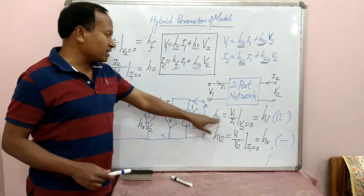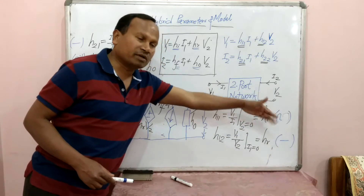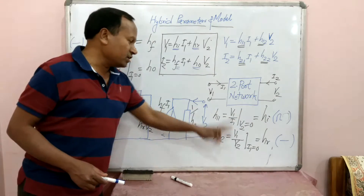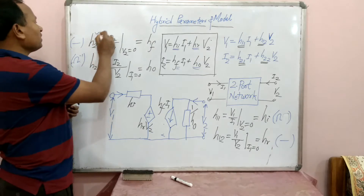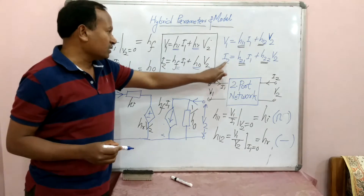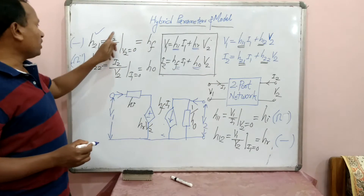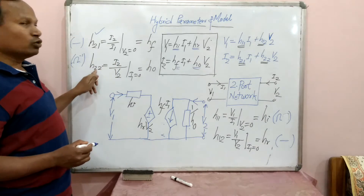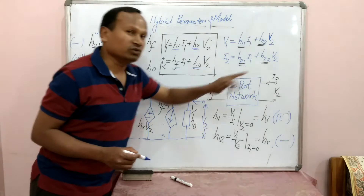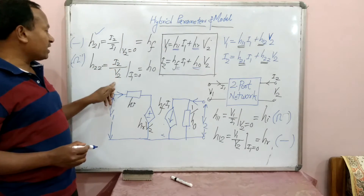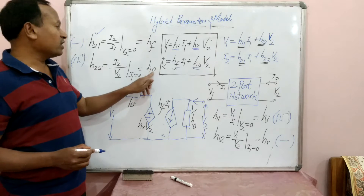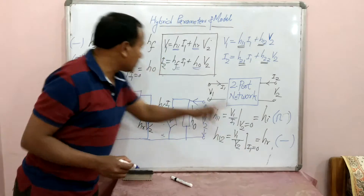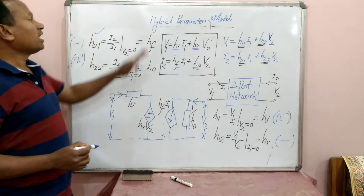H11 has dimensions of ohms (kilo or mega ohm), while H12 is dimensionless since it is a ratio V1/V2. H21 = I2/I1 with V2 = 0, and this is called forward current gain, denoted HF. H22 = I2/V2 is admittance or conductance — specifically output admittance with input open circuit — and is therefore expressed as HO. So HI, HR, HF, and HO are the four hybrid parameters.